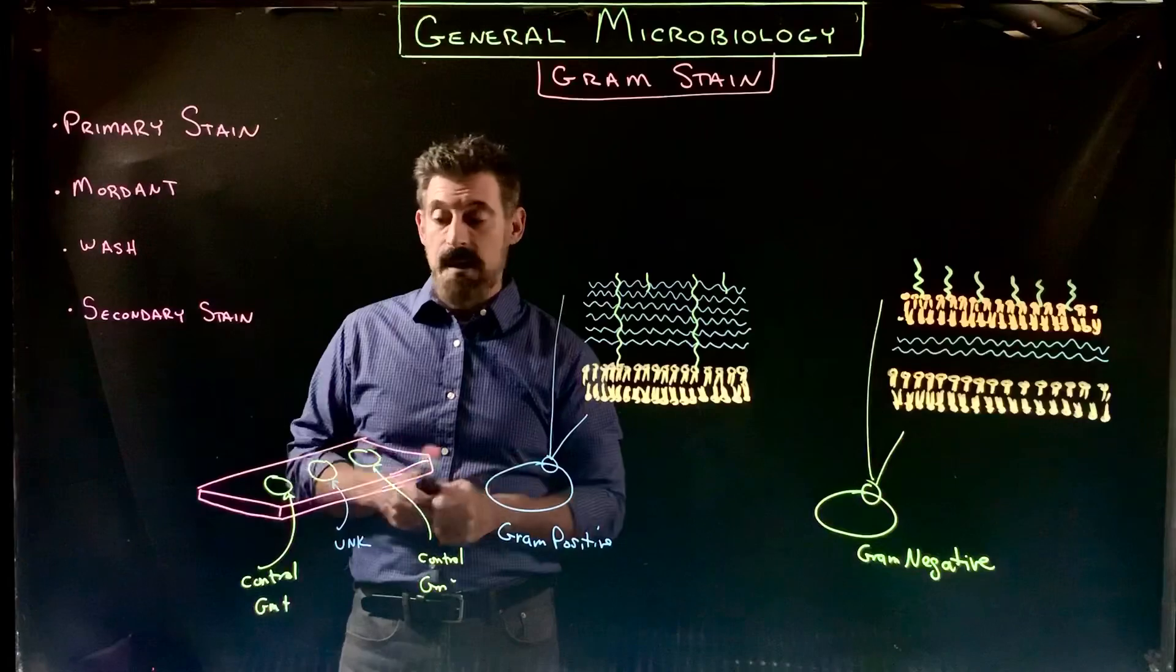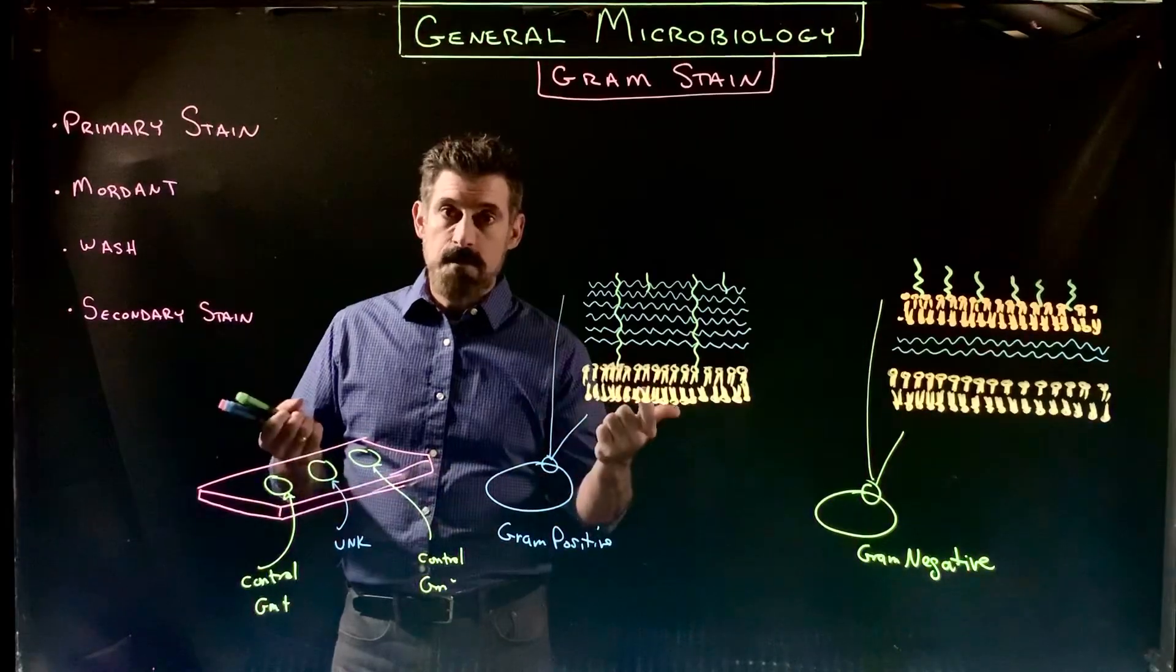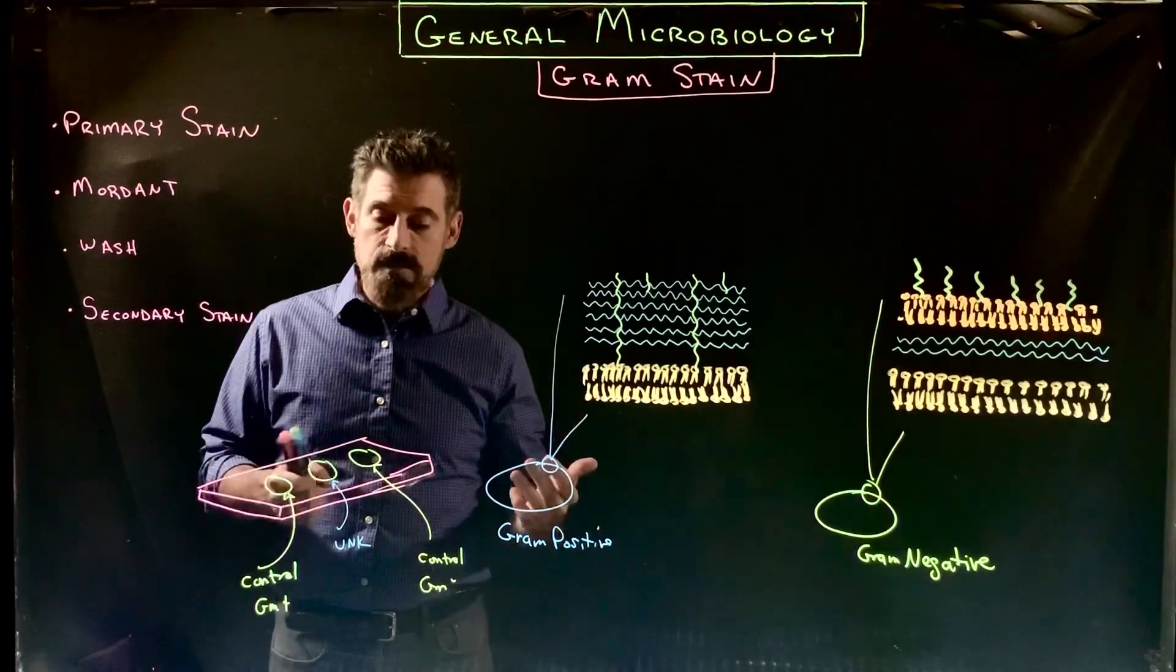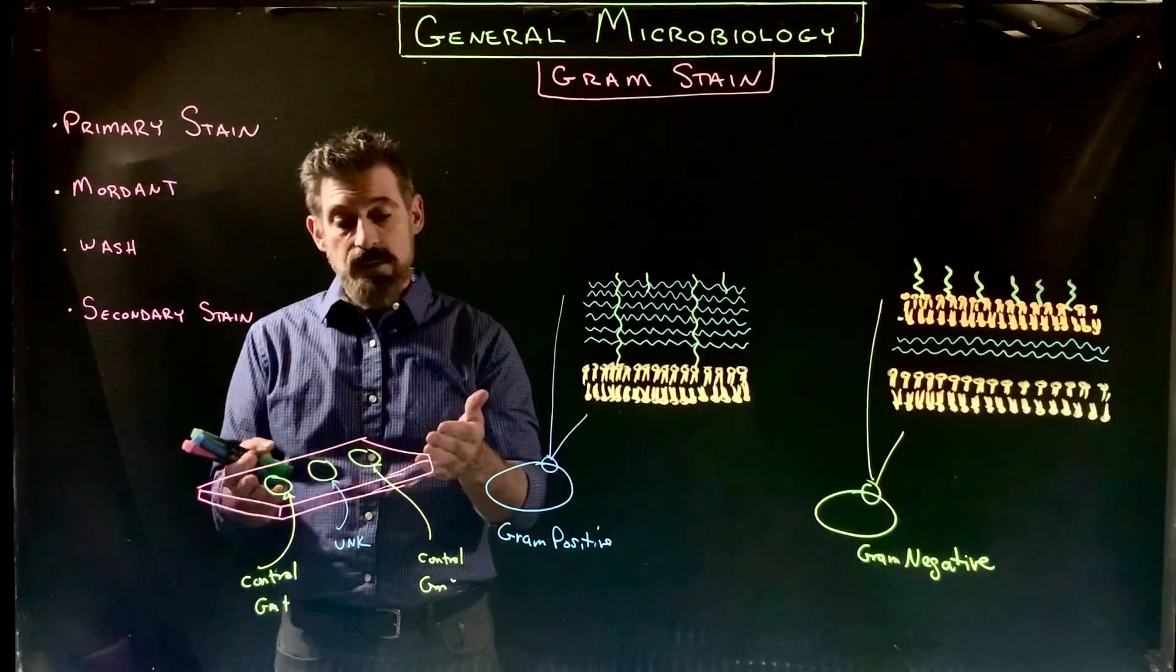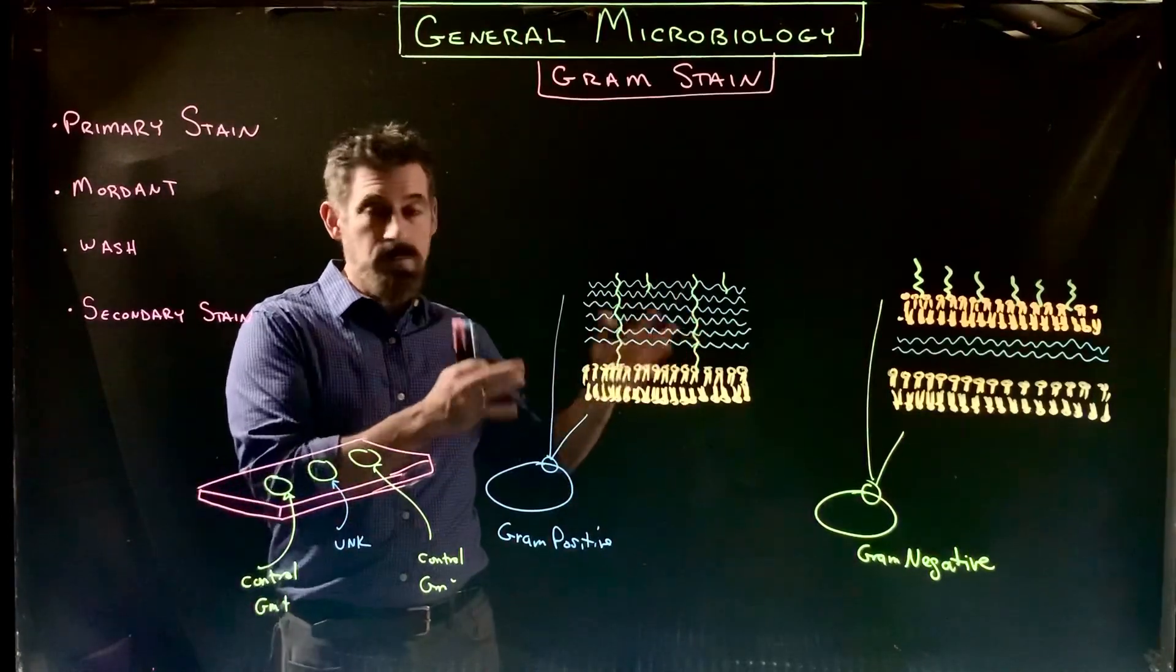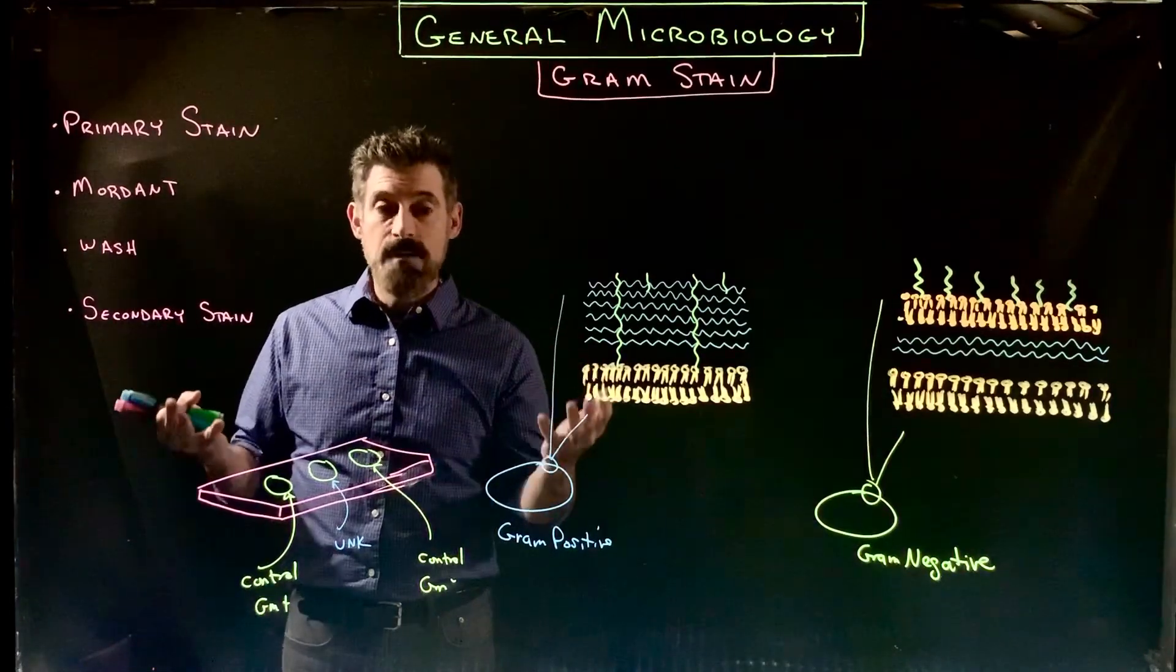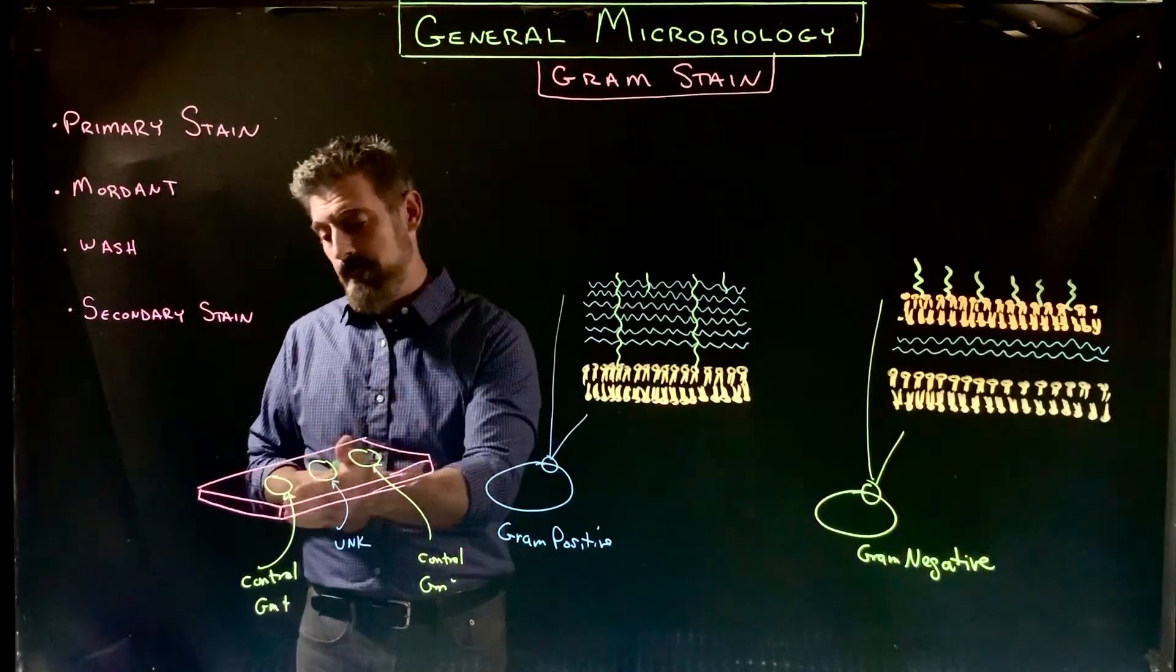You would put a control here for gram positive, a known organism. Over here you would put a control for the gram negative organism, and then here is where you would put your unknown organism that you actually want to stain. It's important that you set up your slide this way partly because the gram stain is really an experiment. If your iodine isn't working, you'll get an incorrect reading. If you happen to use the wrong stain you won't get the correct result. If you decolorize or wash too long, which I'll talk about, you won't get the right result, or if you don't wash long enough you won't get the right result.